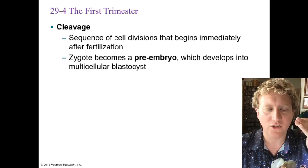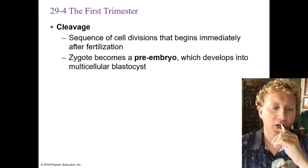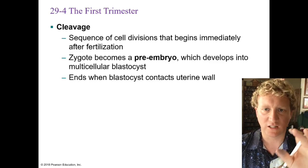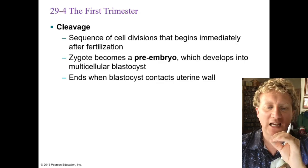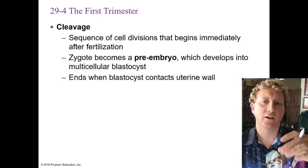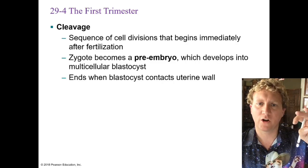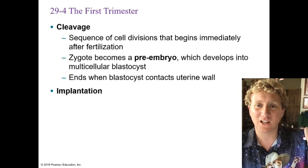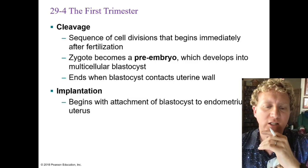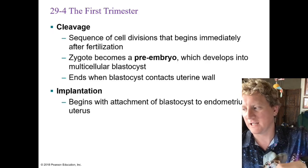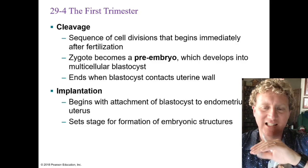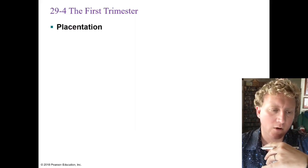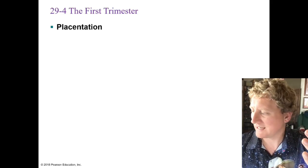Cleavage is a sequence of cell divisions beginning as soon as fertilization takes place. The zygote turns into a pre-embryo and develops into a blastocyst — this ends when the blastocyst contacts the uterine wall. After fertilization in the uterine tube, the embryo starts moving into the uterus. Once it contacts the uterine wall, that's implantation — the baby sticks to the endometrium of the uterus, setting the stage for formation of embryonic structures including the placenta.